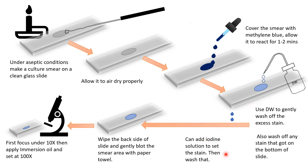As an extra step found in some textbooks, iodine solution can be added to set the stain and then washed off, but you can also skip this. Then wipe the back side of your slide and gently blot the smear area with a paper towel — be careful not to wipe off the smear completely. First focus your slide under 10x on the microscope, then add a drop of immersion oil and adjust to 100x to observe your slide.